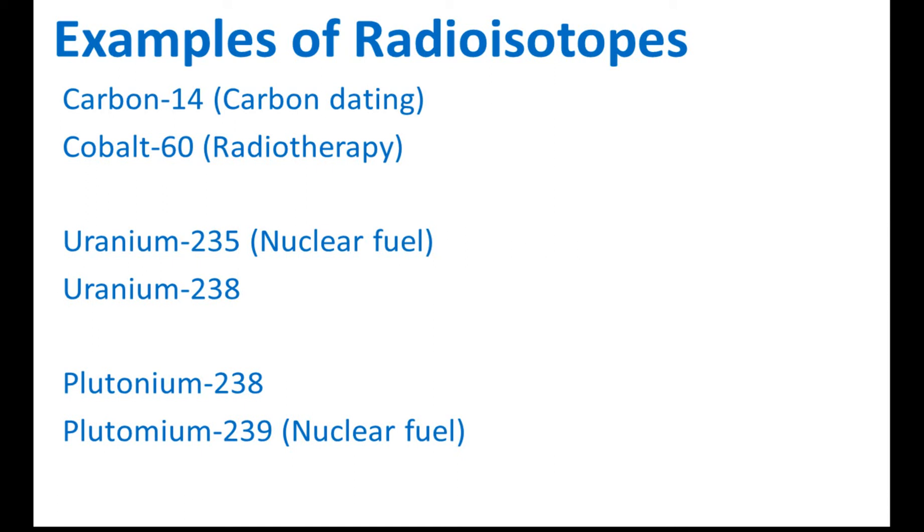A few radioisotopes that you must know in the SPM syllabus: The first one is Carbon-14. Carbon-14 is the radioisotope that we use in carbon dating. Carbon dating is a technology that we use to estimate the age of something in archaeology. Let's say you found a piece of wood—we can use carbon dating to tell how old it is, whether it's 1,000 years old or 2,000 years old. The second one is Cobalt-60, which is used in radiotherapy to cure cancer.